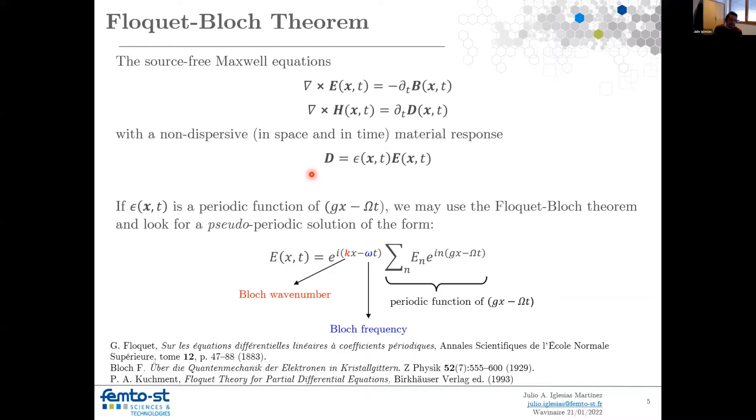This theorem tells us that for a differential equation with periodic coefficients, we have at least one solution of this form, which is a complex exponential with an exponent of k, which we call the Bloch wave number, and omega, that we call Bloch frequency or Floquet frequency, times a periodic function that has the same periodicity as our coefficients, in this case, our grating.